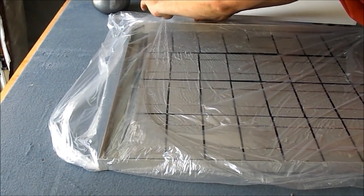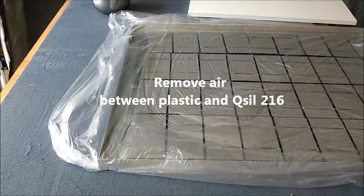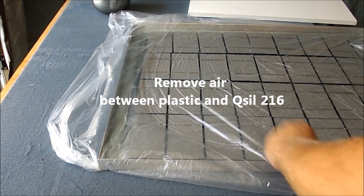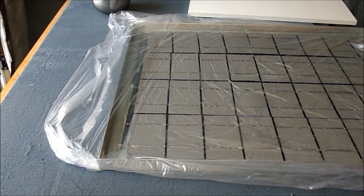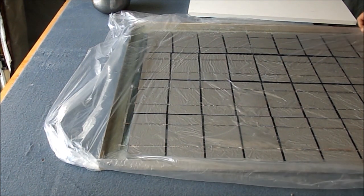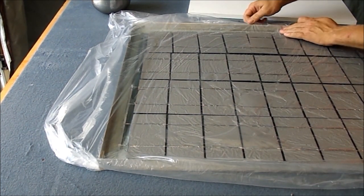Carefully work your way around the panel, smoothing out the plastic and removing as much air from between the plastic and the encapsulant as possible. Do not disrupt the layout of the cells though, for it is easy to move them as they are floating in the encapsulant.